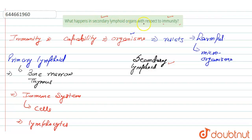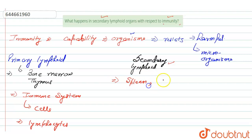Talking about the secondary lymphoid organs — the question is asking what happens here with respect to immunity. The secondary lymphoid organs include the spleen, lymph nodes, and tonsils.